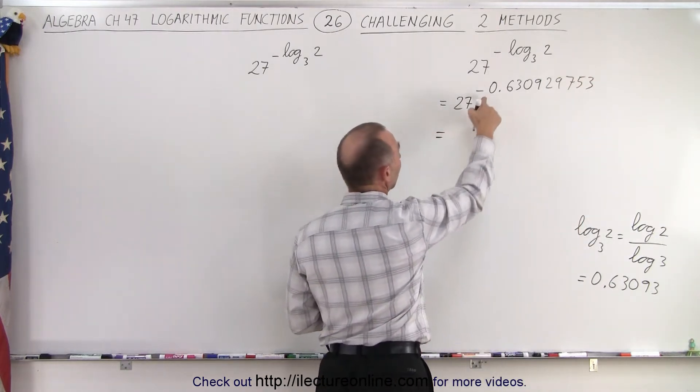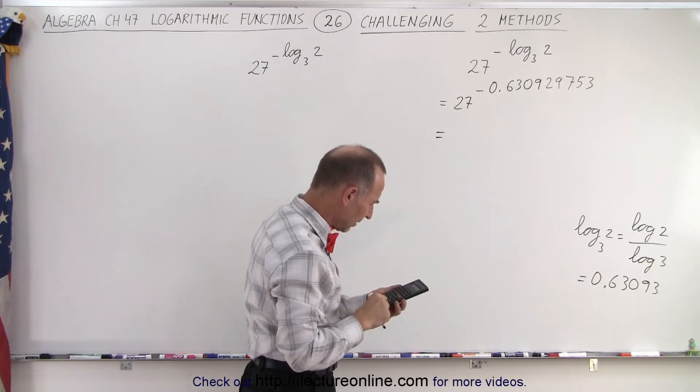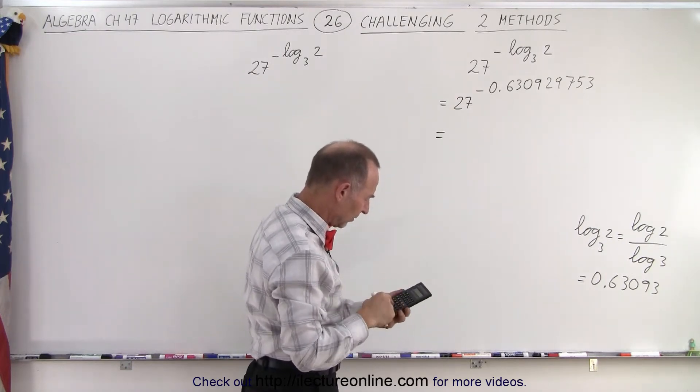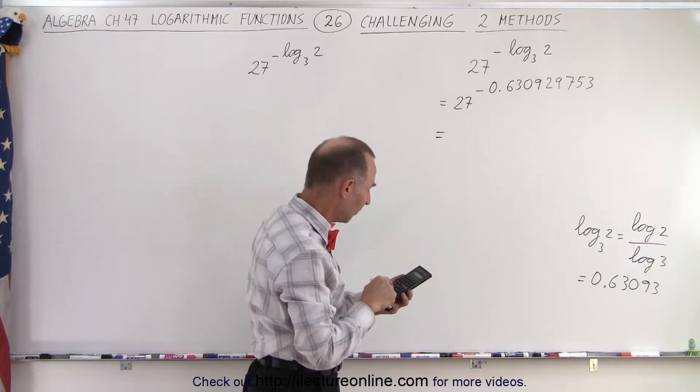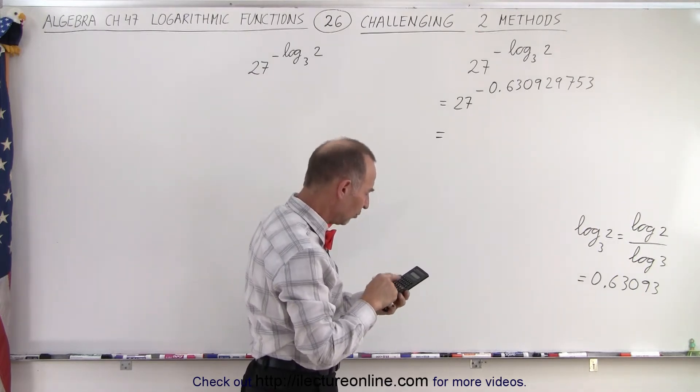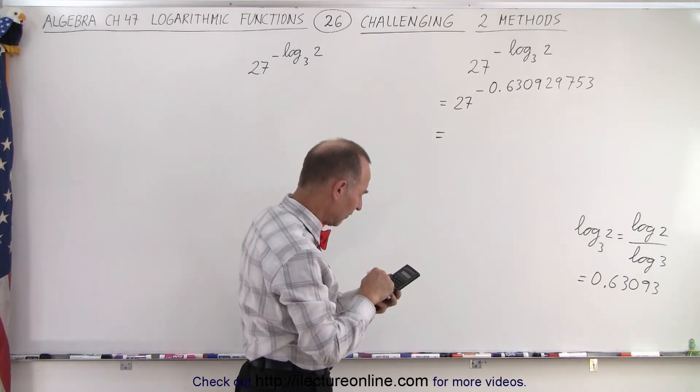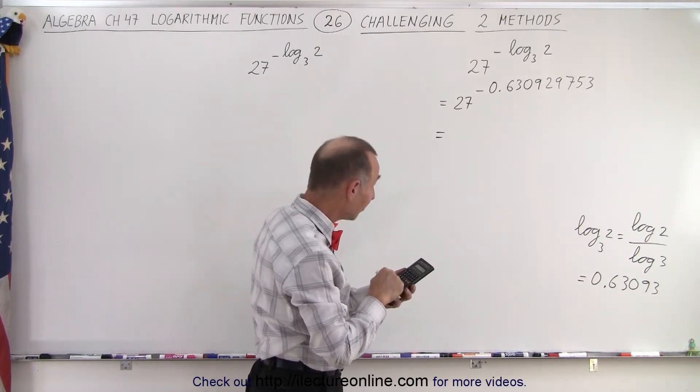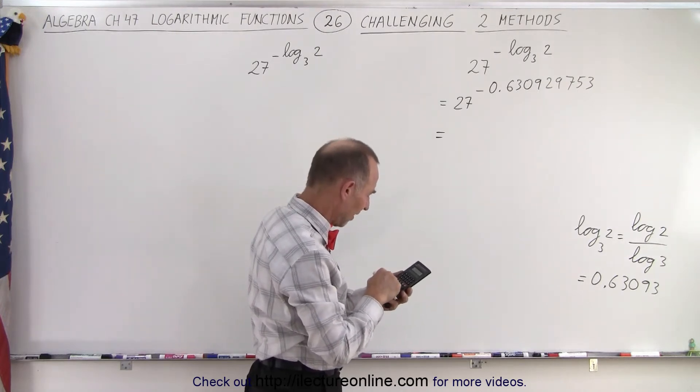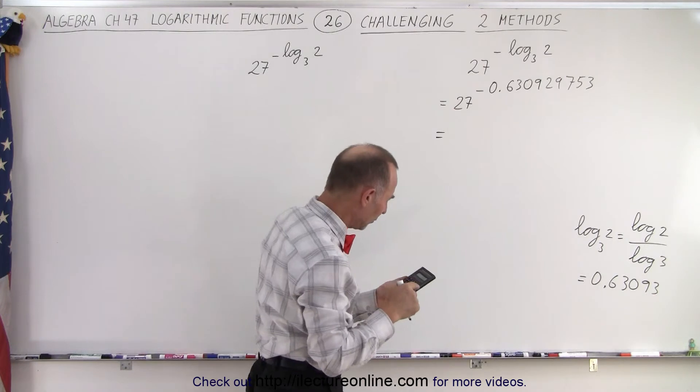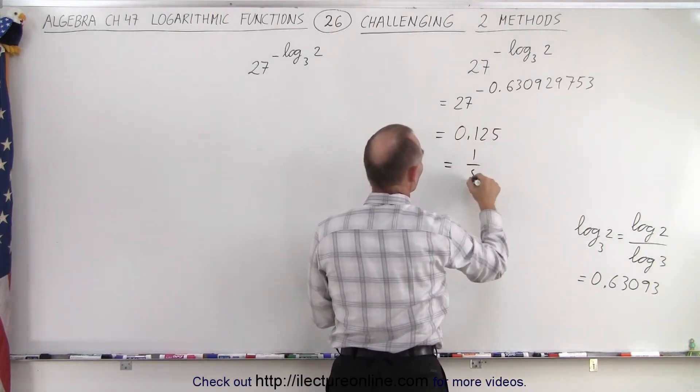So now we take the number 27 and raise it to that power. So let's see what we get. So put the negative sign in there. Let's see here, 27 raised to the negative... let's try again. 27 raised to the 0.630929753, put the negative in front, and we get 0.125, which is equal to 1 over 8.